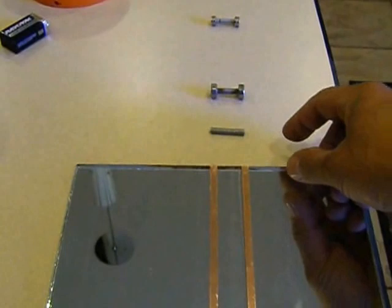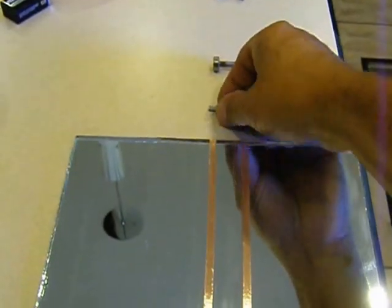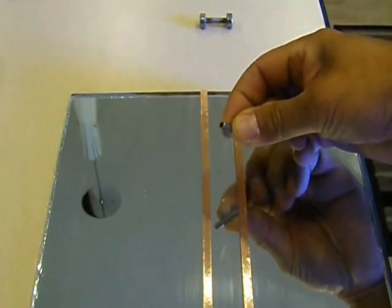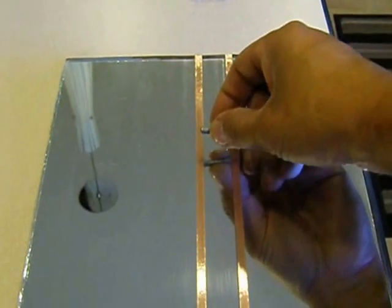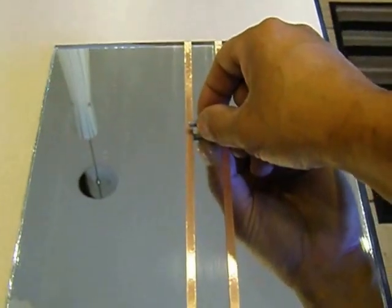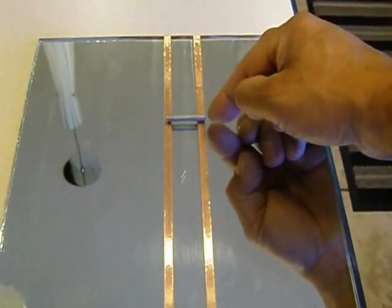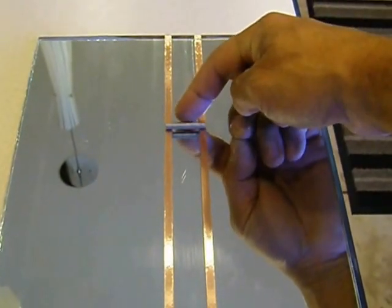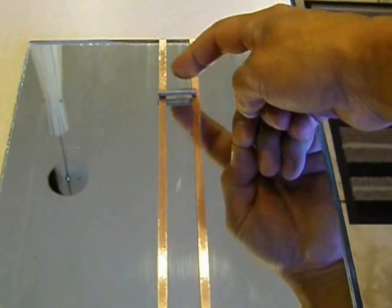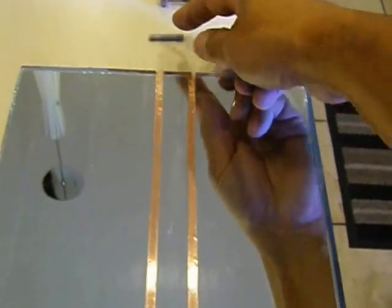What I would like to show you is that if you take this rod, or what this is just a piece of steel tubing, and place it between the copper strips, it does not tend to move. It just rolls off.